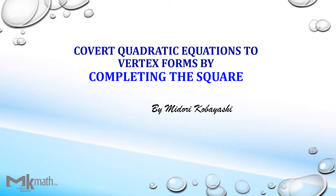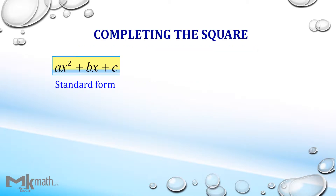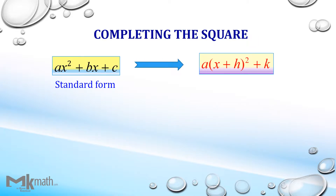In this video, I'd like to show the completing the square method. Quadratic functions have the standard form of ax² plus bx plus c, where a, b, c are known values. Changing to the form a bracket x plus h squared plus k is called the vertex form by completing the square.